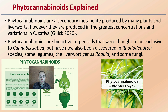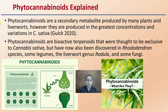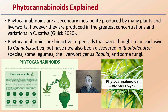First off, we need to understand there's something called phytocannabinoids. Phytocannabinoids are a secondary metabolite produced by many plants and liverworts. However, they are produced in the greatest concentrations and variations in cannabis sativa. Phytocannabinoids are bioactive terpenoids, which were thought to be exclusive to cannabis sativa, but have also been discovered in rhododendron species, some legumes, the liverworts genus, and some fungi. So it's not just cannabis, even though we relate them to cannabis simply because they're found in the greatest concentrations there.